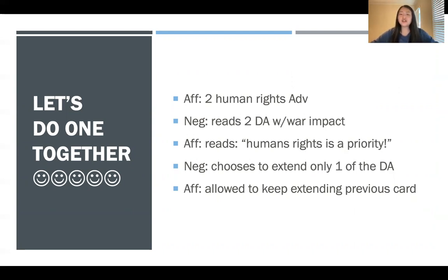The neg might choose to only extend one of the disadvantages — that's totally fine, because you do not have to extend everything. It's very possible the negative kicks out of one of the dissads, maybe during the neg block. The aff is then allowed to keep extending their previous card saying 'human rights is a priority,' because even if they read it against a different dissad, that argument is still applicable to the one dissad the negative did try to extend.